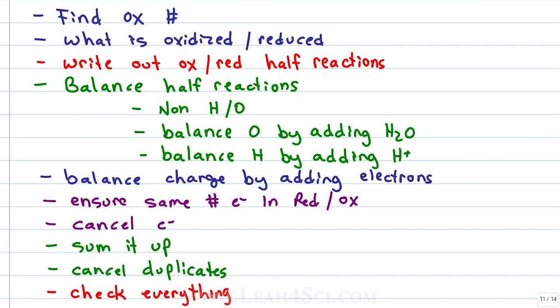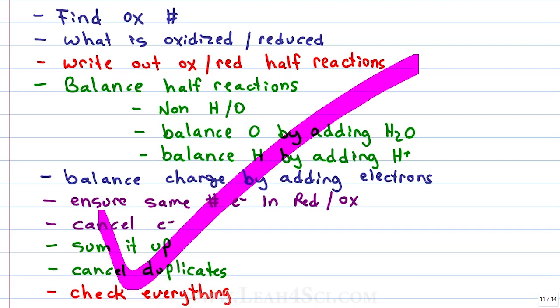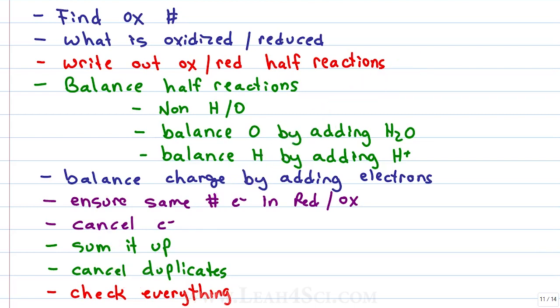So instead, what we're going to do when balancing in basic conditions is do everything exactly as we see here, where the only difference is at the very end after we sum up our reaction, we're going to find every H+ and add OH- to both sides accordingly.